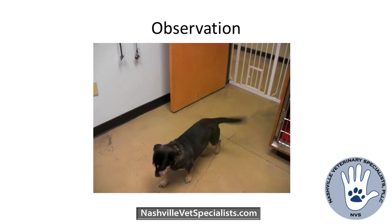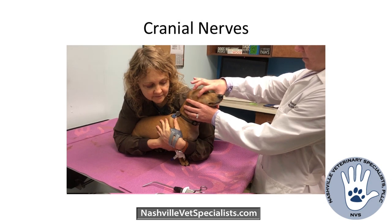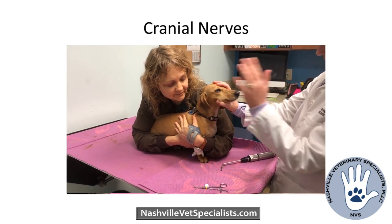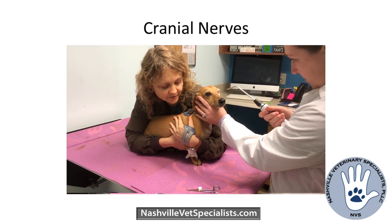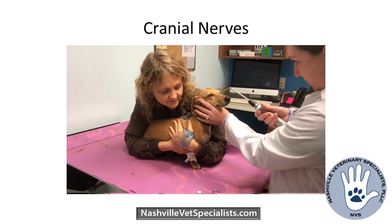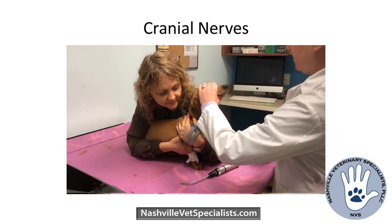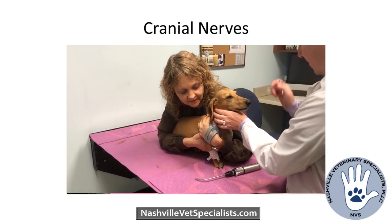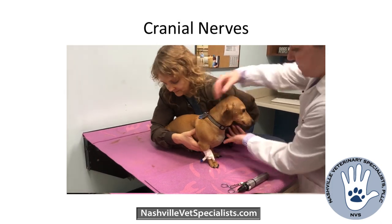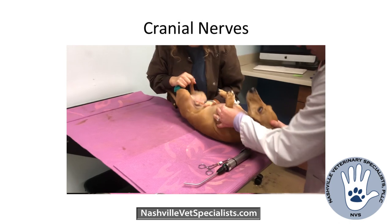Cranial nerves are typically next. I try to do things in the same order every time so I don't leave something out. Assess the menace in each eye individually while the other eye is covered. Check pupil size before checking PLR — are they equal in size, and do they both respond the same to light? A lot of animals are scared, so they might have an incomplete PLR, but as long as there's some response and pupils are equal, I consider that normal. Check for facial sensation, physiologic nystagmus by moving their head side to side, and then pathologic nystagmus by laying them on each side and in dorsal recumbency.